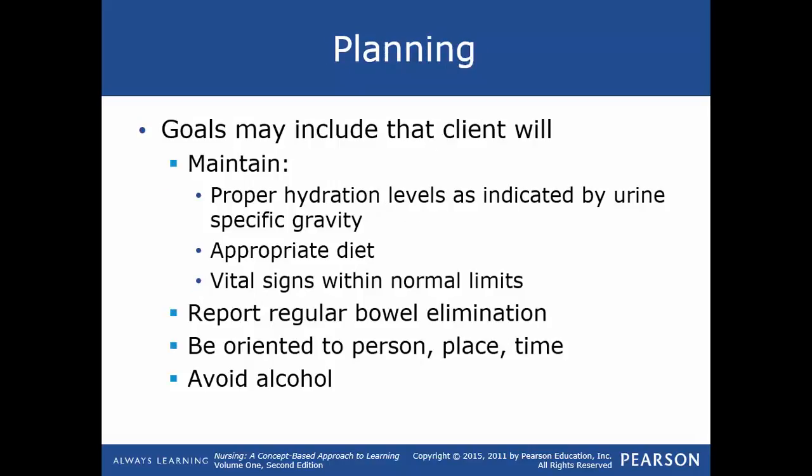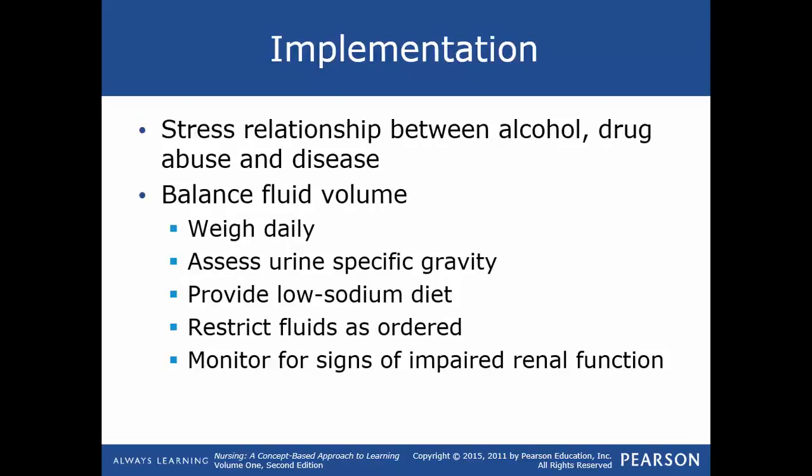Planning goals may include that the client will maintain proper hydration levels as indicated by urine specific gravity, appropriate diet, and vital signs within normal limits. The client will report regular bowel elimination, remain oriented to person, place, and time, and avoid alcohol. Implementation includes stressing the relationship between alcohol and drug abuse and the disease. To balance fluid volume: weigh the patient daily, assess for jugular vein distension, measure abdominal girth daily, check peripheral edema, and monitor intake and output.